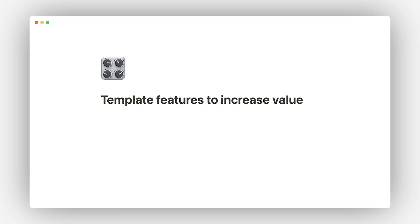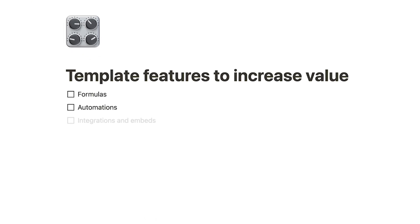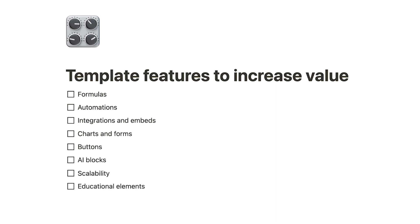We've covered these before, but as a reminder, features that can add value to a template include formulas, automations, integrations and embeds, charts, forms, buttons, AI blocks, scalability, and educational components such as guides, videos, callouts, or customer support that make it easier for people to start using your template. Each of these features requires time and effort to develop. As you increase both the quality and quantity of advanced features and integrate them into your template's overall design, the more you can reasonably charge for your work.